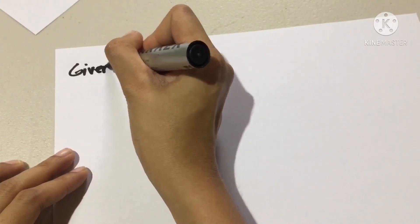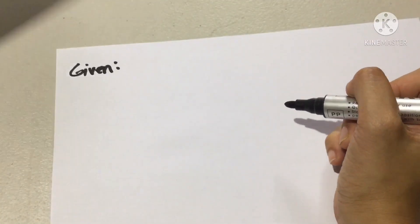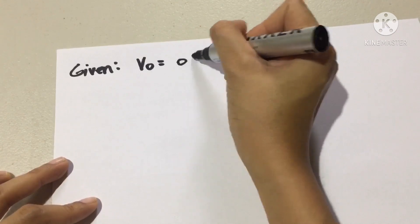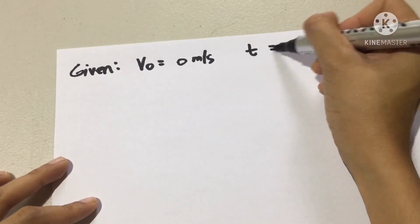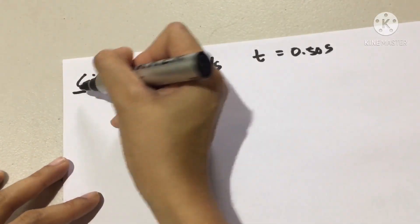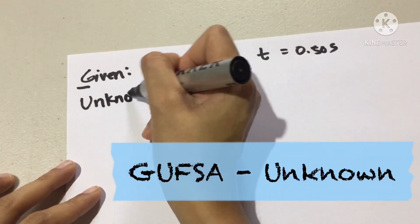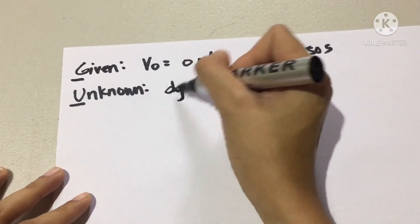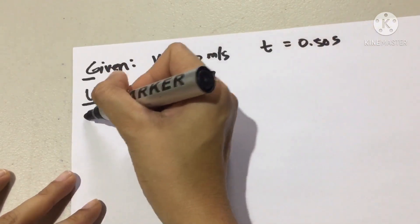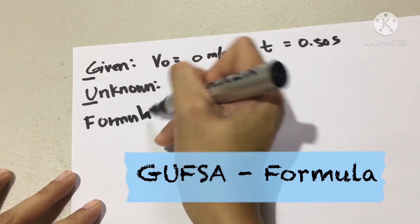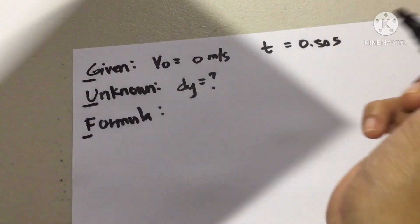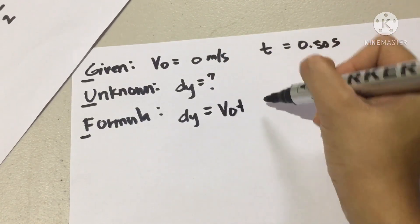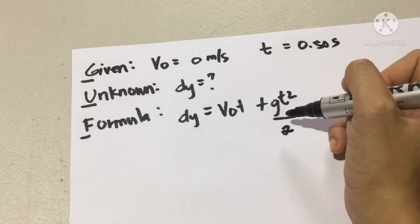Let's start with the GUFSA technique. For our given, what are the givens? Let's go back to the free body diagram. So, what we have here is that the initial velocity is equal to 0 meters per second and our time is equal to 0.50 seconds. That is our given. How about the unknown? The unknown are two. But, I am only asking you to solve our unknown ∆Y. So, what is our formula? The best formula to use since it's the easiest: ∆Y is V₀T plus GT squared. So, ∆Y is equal to V₀T plus GT squared divided by 2.